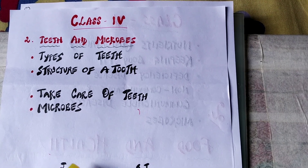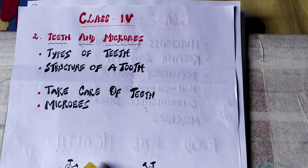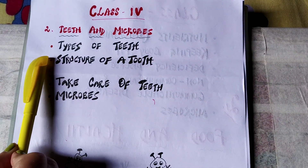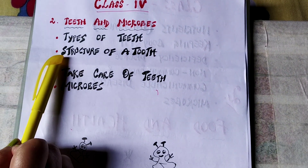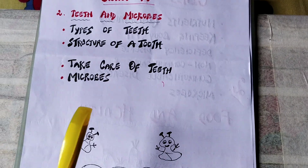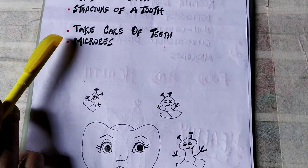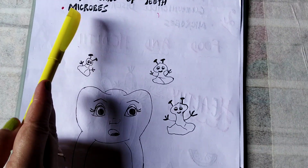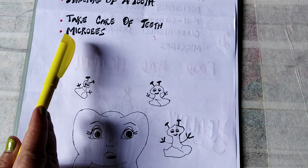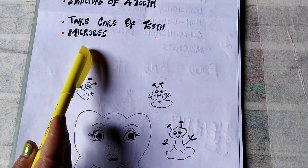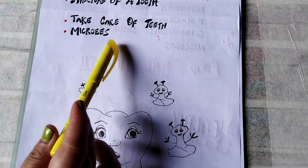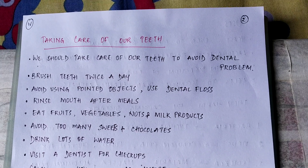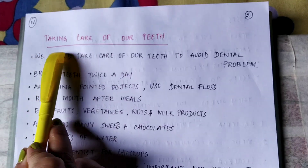Hey students, I hope you have gone through the previous clip. In that we studied about the types of teeth and the structure of a tooth. Today's class we will be studying about how to take care of teeth, and about microbes — their benefits and their disadvantages, that is how they cause disease and how they are harmful. These are the topics we will study for today.